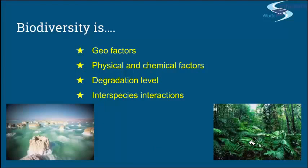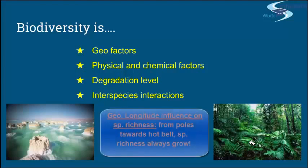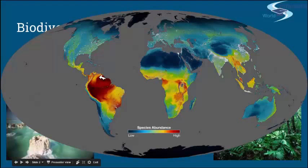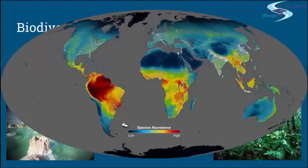After all these main factors, the most feasible one would be the factor of geographical longitude. This basically shows us that from the poles going towards the hot belt, species richness always grows. Here it is low to high — really poor in species abundance at the poles — and then going towards the hot belt, which would be Africa and South America, the biggest concentration of different species would definitely be in that hot belt area.